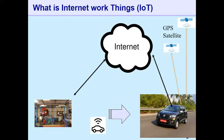To introduce IoT, consider this scenario: you are driving in your IoT-enabled car — a car with internet connectivity. The car is driving and developing a problem; the engine temperature is going up without your knowledge. The sensors inside the car detect this, read the temperature, and send it to the on-board computer.